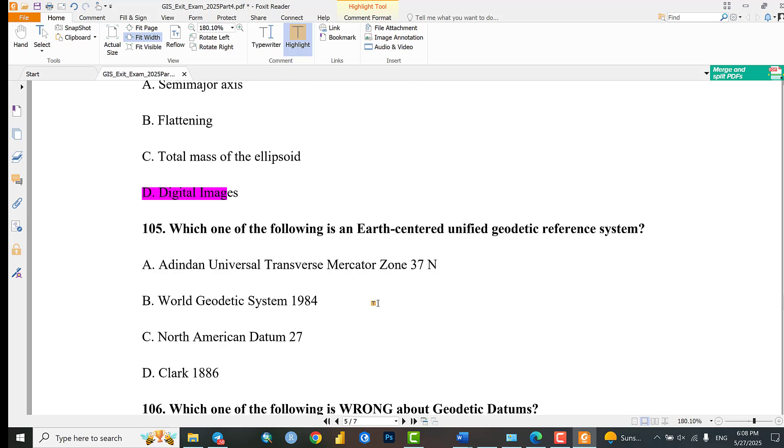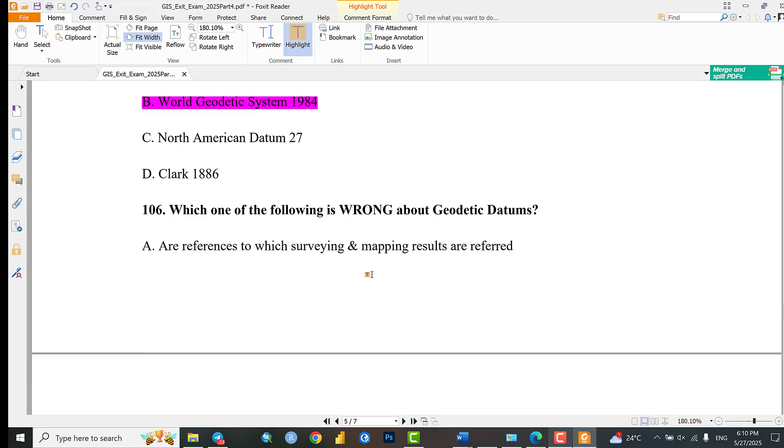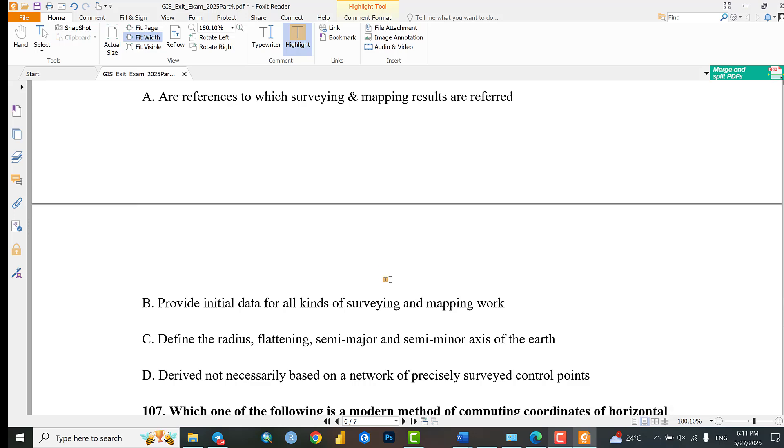Question 105: Which of the following is an Earth-centered unified geodetic reference system? Adindan, Universal Transverse Mercator Zone 37 North, World Geodetic System 1984, or the Somali Erat? The correct answer is World Geodetic System 1984. Question 106: Which one of the following is wrong about geodetic datums? Are referenced to which surveying and mapping results are referred, provide initial data for surveying and mapping work, define the radius flattening semi-major axis of sensors, or do not necessarily need precisely surveyed control points? The answer is D.